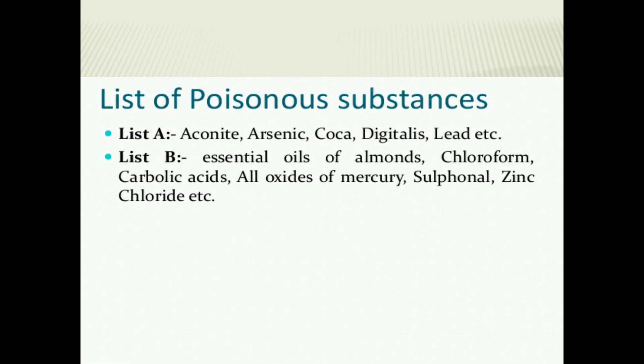List of the poisonous substances. The list contains: essential oil of almond, chloroform, carbonic acid, all oxides of mercury, sulfonyl, zinc chloride, etc.